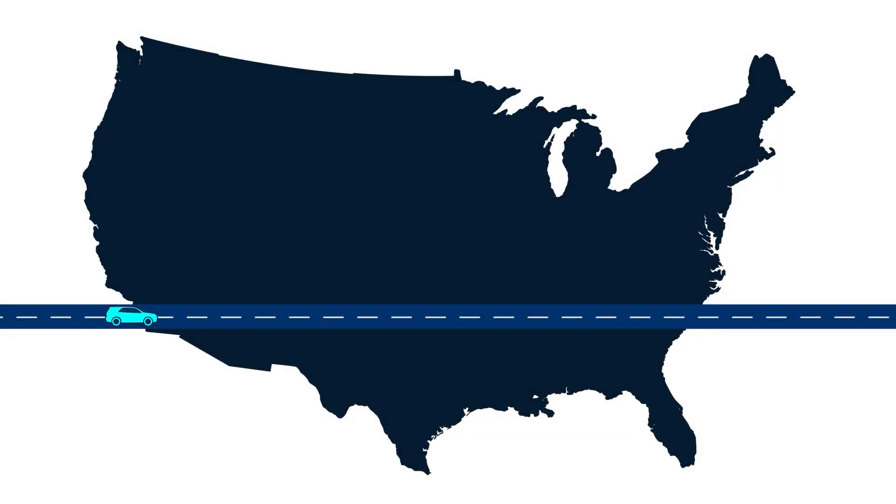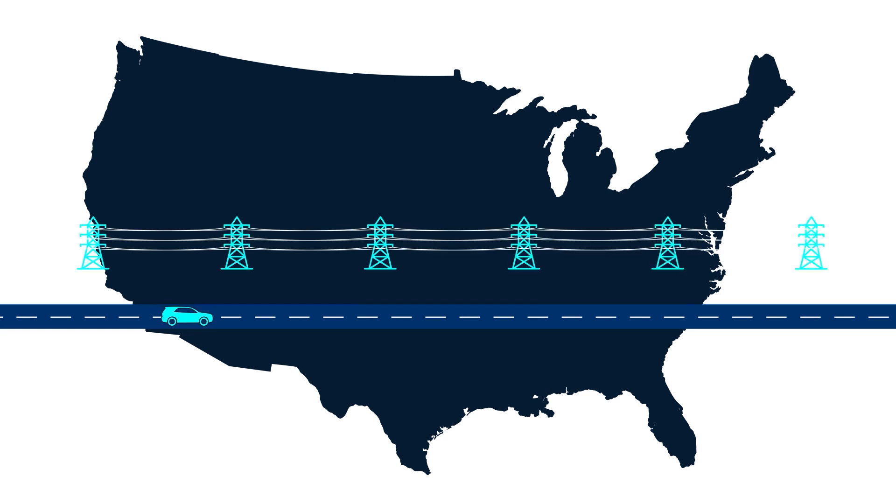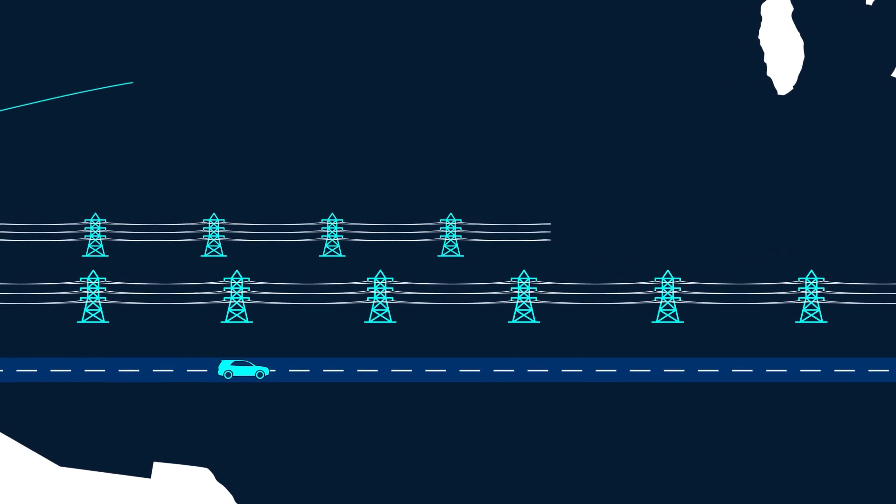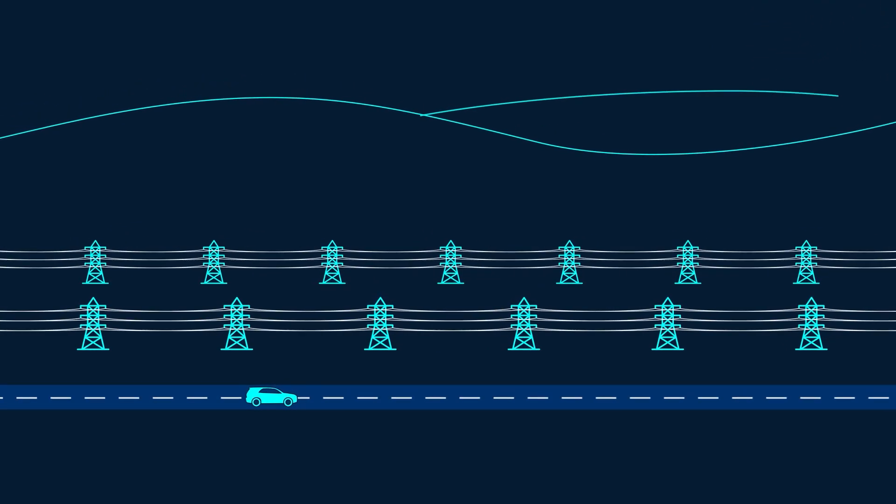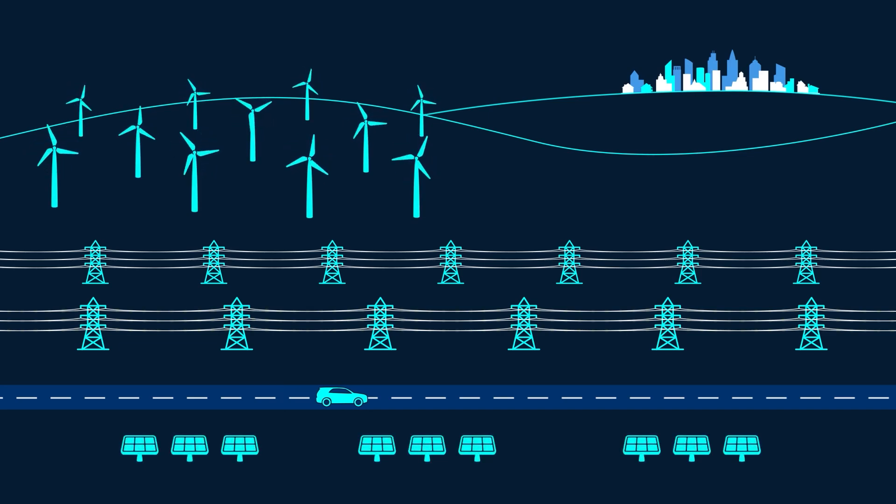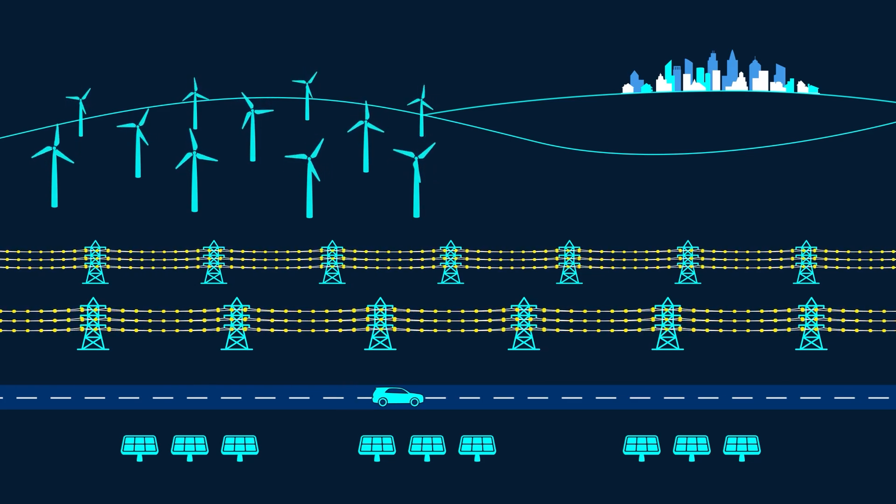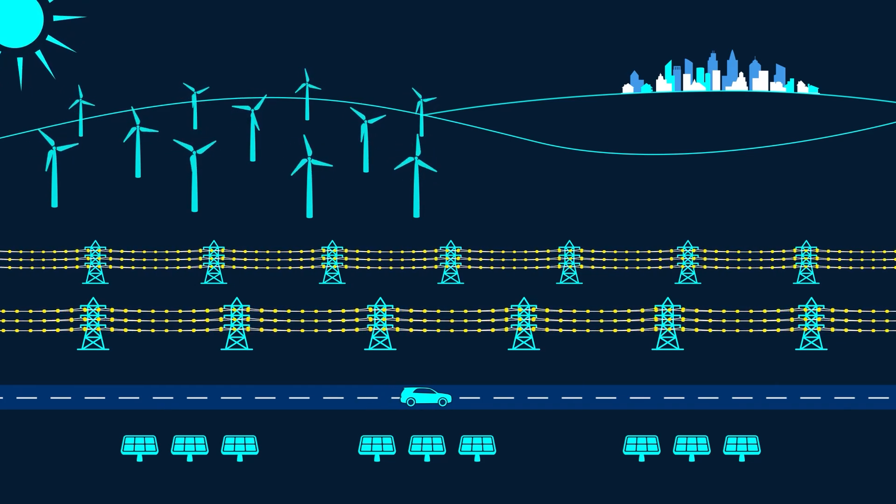If you've ever road tripped across the United States, chances are you saw a lot of power lines. And in a new high renewable energy future, you might see even more. That's because it's going to take a lot more wind and solar to decarbonize and a lot more transmission to deliver all that electricity from the windiest and sunniest regions to where people live.